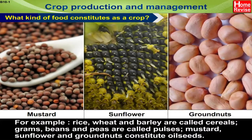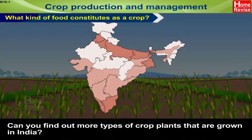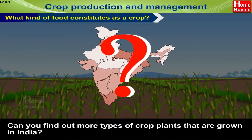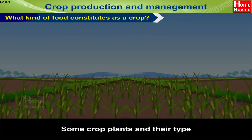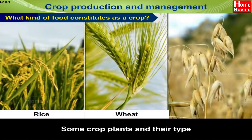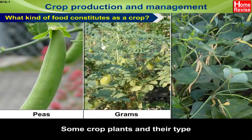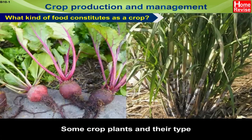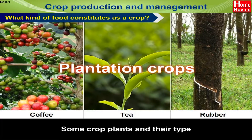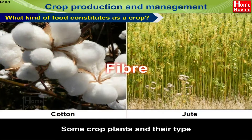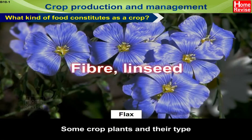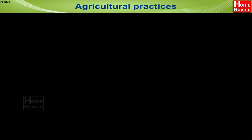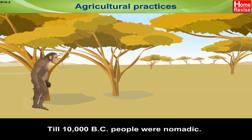Mustard, sunflower and groundnuts constitute oil seeds. The table here shows some crop plants and their types: rice, wheat and barley are cereals; peas, grams and dals are pulses; mustard and groundnut are oil seeds; beetroot and sugarcane are sugar crops; coffee, tea and rubber are plantation crops; cotton, jute and flax are fiber crops; and linseed is also a fiber crop.